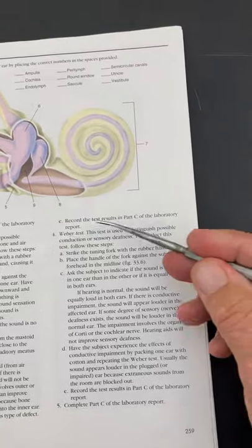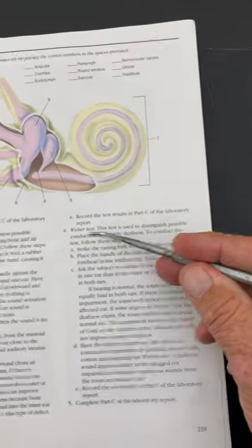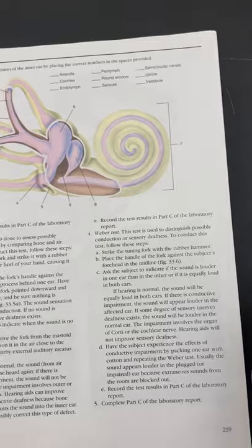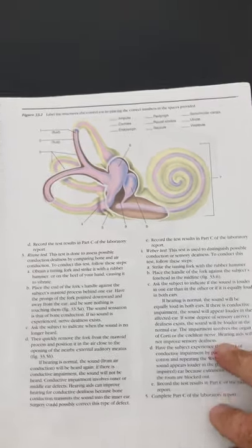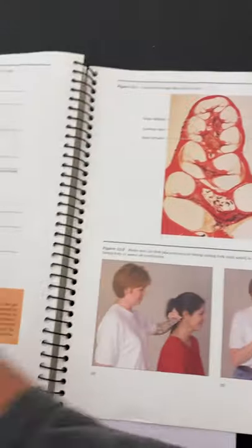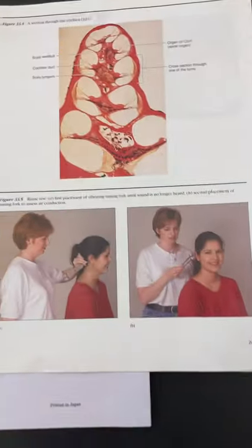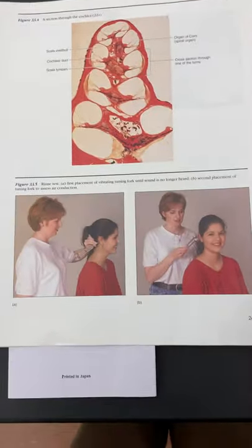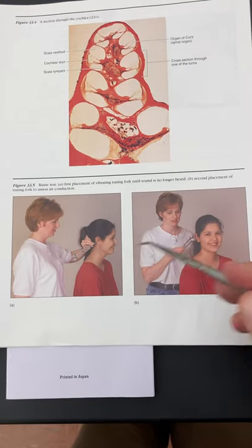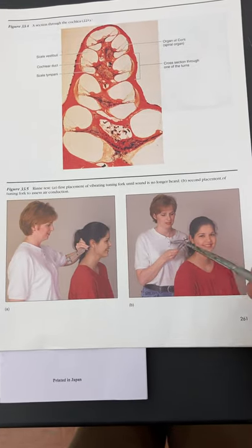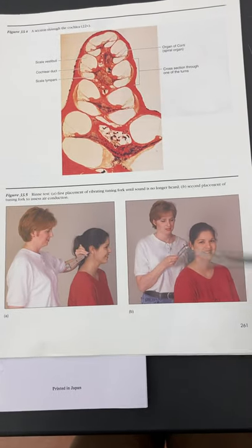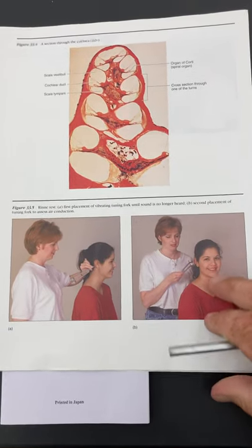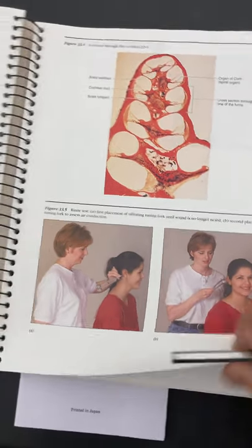Then we have the Weber test. You can find pictures of it online. There's the Rinne test and the Weber test — the Weber test is for determining if both ears have equal hearing by vibrating the tuning fork and holding it to the forehead.